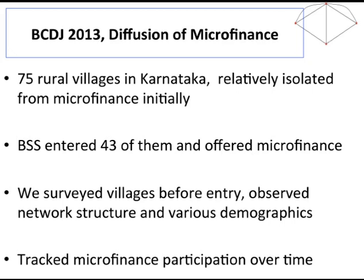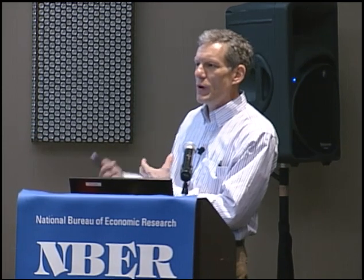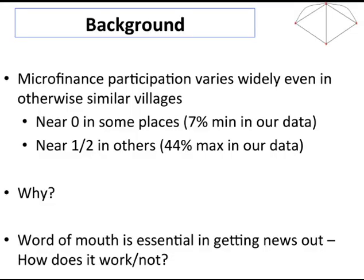We were looking at a set of villages in Karnataka. A microfinance organization went in and contacted people in villages to try and tell them about an available loan program. We mapped out networks and then tracked who they talked to and how that information dispersed. We surveyed the village before entry — we have network structure, demographics, and then this diffusion process over time. When you look at the participation rate, you might get very different effects in different areas — near zero participation in some villages and almost 50% in others.